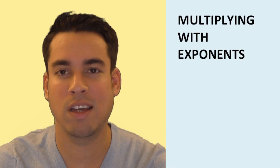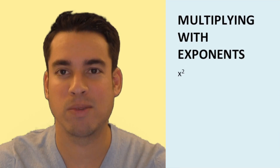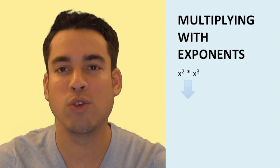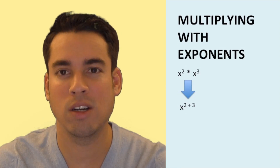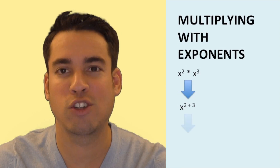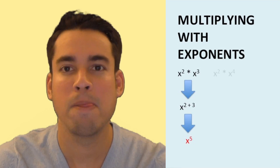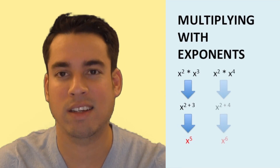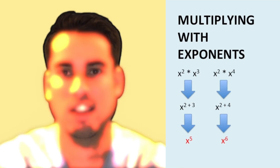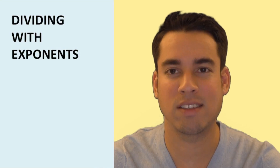The rule is: when you multiply same-base terms, you add the exponents. So x squared times x cubed becomes x to the fifth. x squared times x to the fourth becomes x to the sixth, and so on. Now let's talk about dividing bases with exponents.